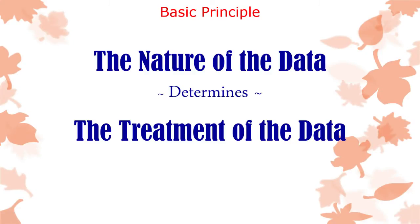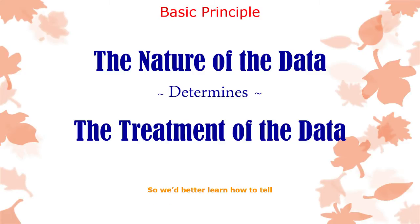Here's a basic principle that we need to learn, and you'll see about a thousand times in these lectures: the nature of the data determines the treatment of the data. You can't do certain things with certain kinds of numbers or categories. You have to treat the data in a way that respects what it is. This is extremely important. So you need to learn how to tell what the nature of the data is, and be able to tell what scale of measurement data is measured on.